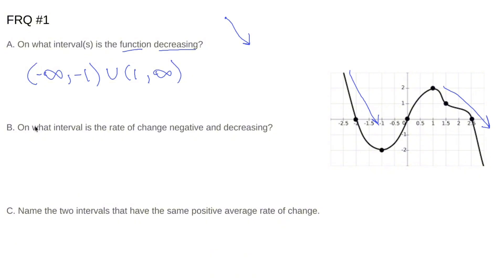Now let's take a look at b and understand the difference between what's being asked. b is asking on what interval is the rate of change not only negative, but decreasing. Rate of change is a fancy word for slope.